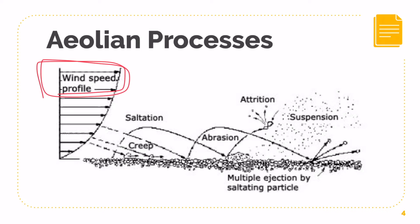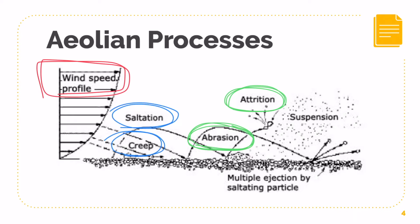You can see that abrasion is an erosion-type process. Attrition is also erosion. The rest — saltation, creep, and suspension — are going to be your transportation processes. From this diagram alone, you can roughly tell which are the more important processes that we're going to need to take note of.